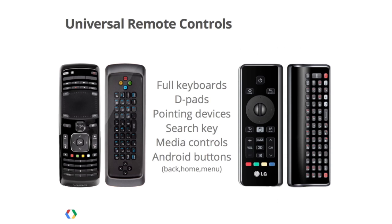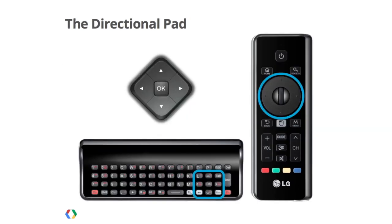Users interact with Google TV using handheld remote controls. Remote controls for the current generation of Google TV devices have a number of similar features, including full keyboards, directional pads, pointing devices such as touchpads or gyroscopic pointers, a search key to access Global Quick Search, media control keys, and the Android buttons Back, Home, and Menu. The directional pad, or D-pad, is a very important feature of the remote controls for Google TV.